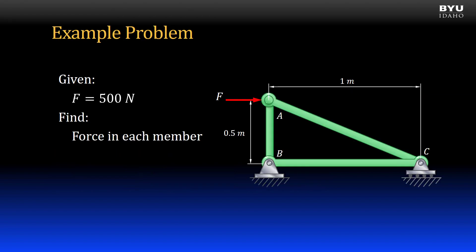In this example we have a three-member truss. It is supported by a pin support at B and a roller support at C. A force of 500 newtons is applied at point A as shown. We will find the force in each member.